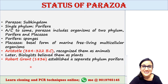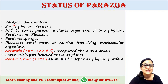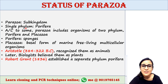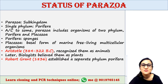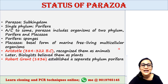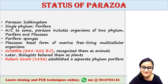When we talk about the status of a particular animal, it means where the animal is placed in its taxonomy, or its systematic position. Parazoa is a sub-kingdom which generally groups a single phylum, Porifera. But according to some authors, Parazoa includes organisms of two phyla — Porifera and Placozoa. Porifera consists of sponges, and Placozoa consists of a basal form of marine free-living multicellular organisms.